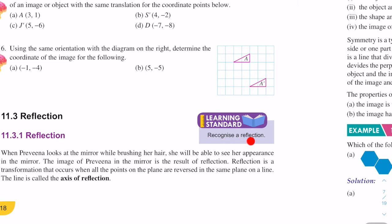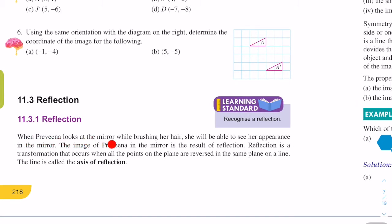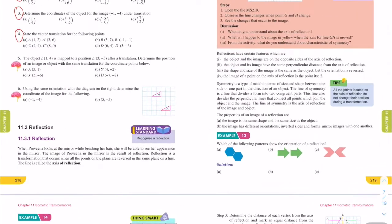Recognize a reflection. When Pre-vina looks at the mirror while brushing her hair, she will be able to see her appearance in the mirror. The image of Pre-vina in the mirror is the result of reflection. Reflection is a transformation that occurs when all the points on the plane are reversed in the same plane on a line. That line is called the axis of reflection.